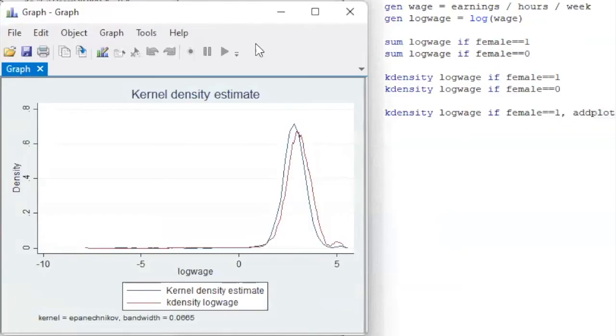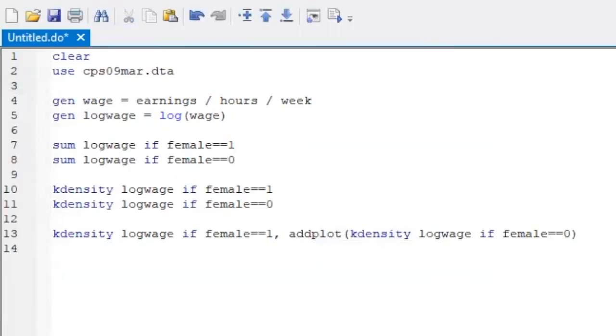We can see the two densities together, but we can be more informative about the two lines. We can use the legend function. The first line represents women, and the second line represents men.